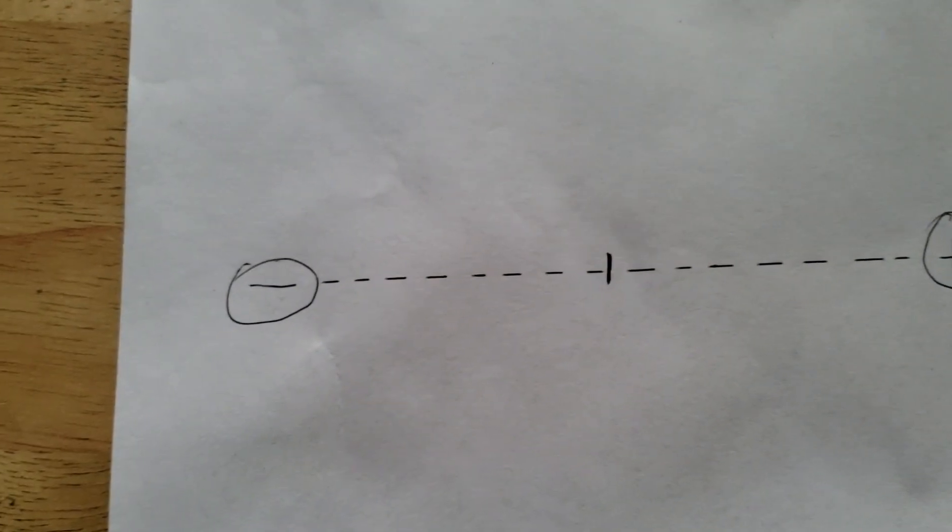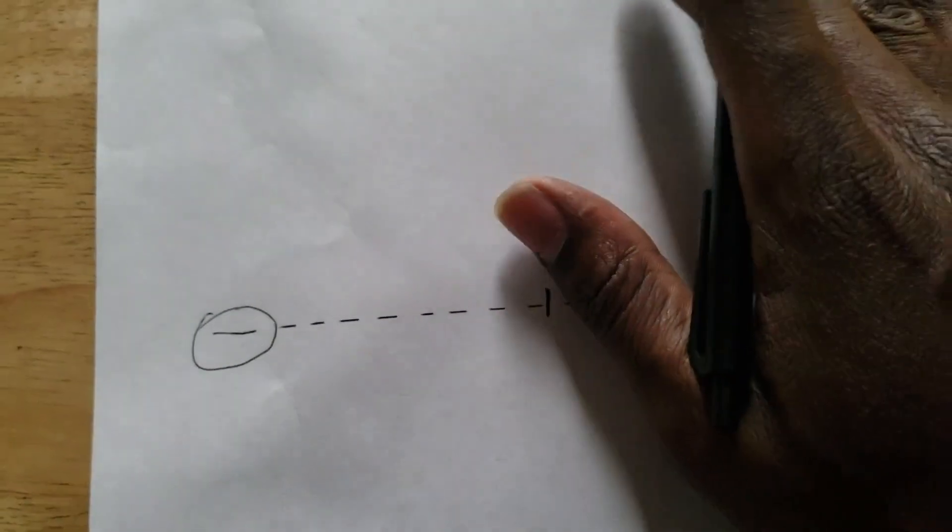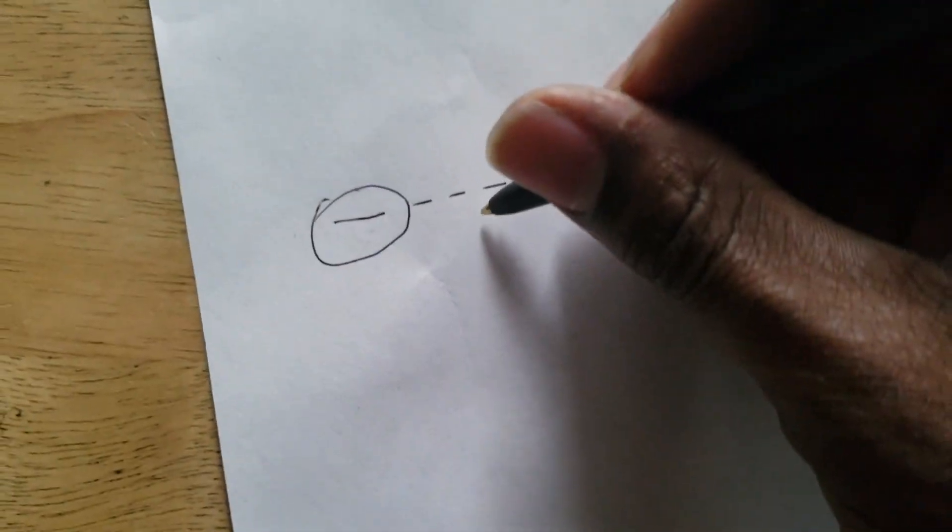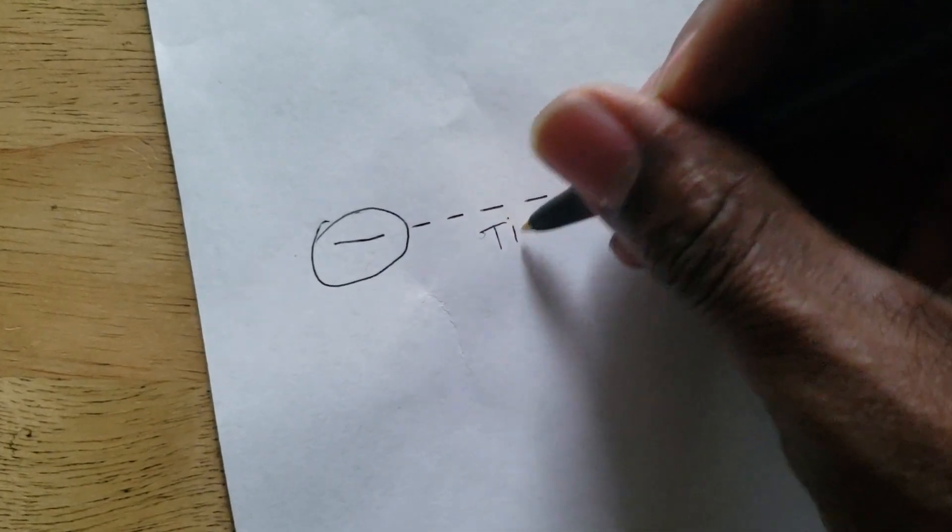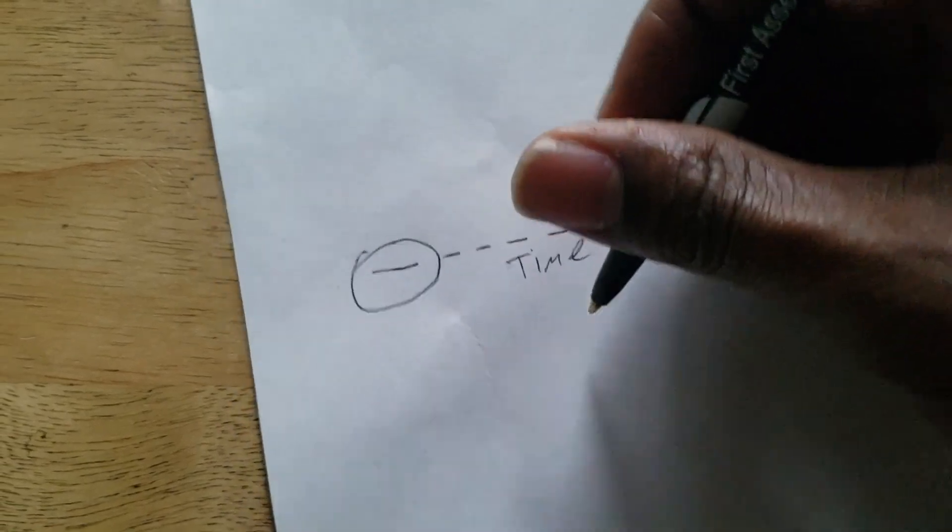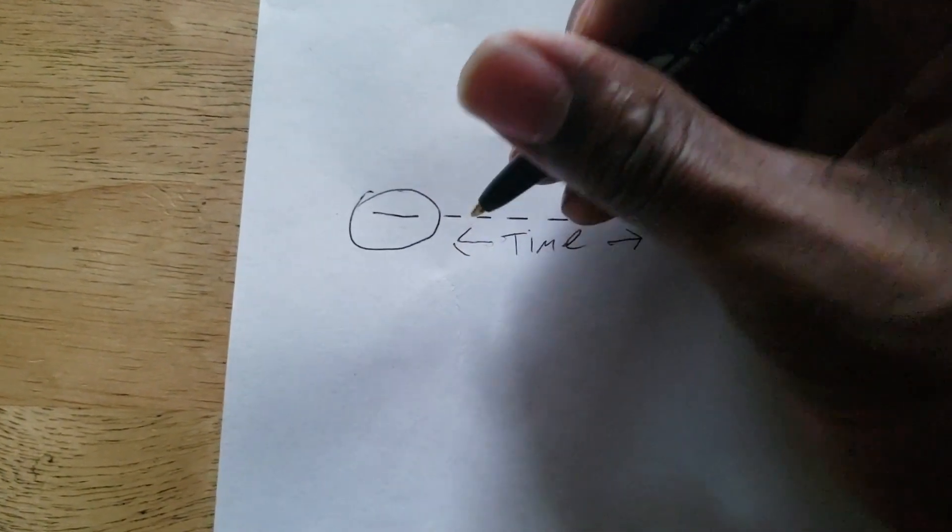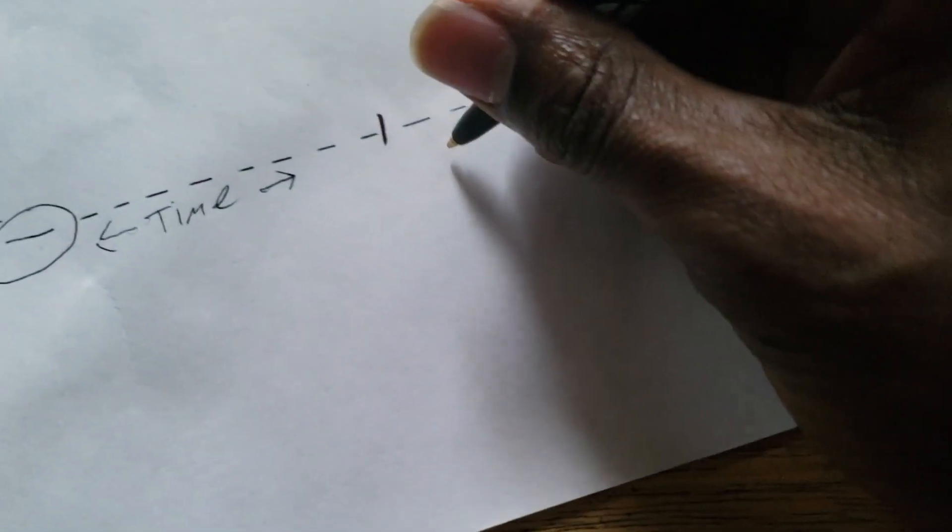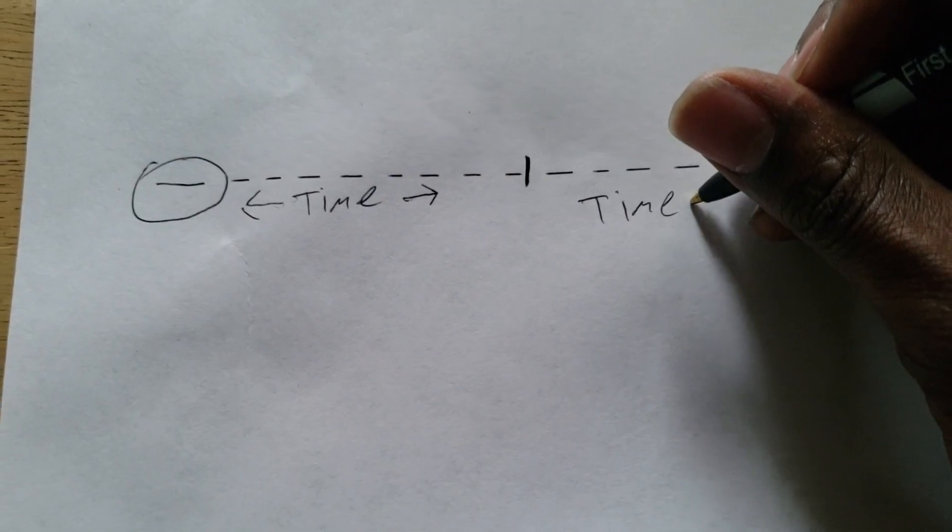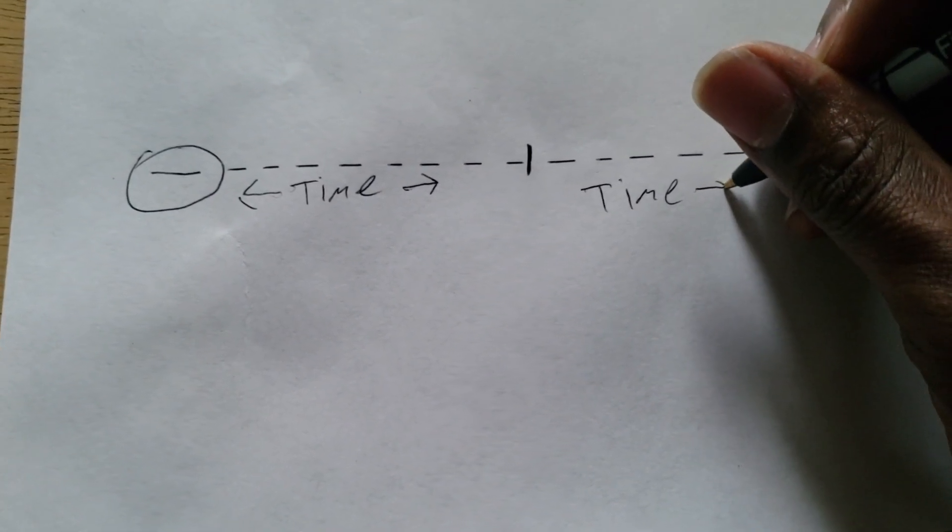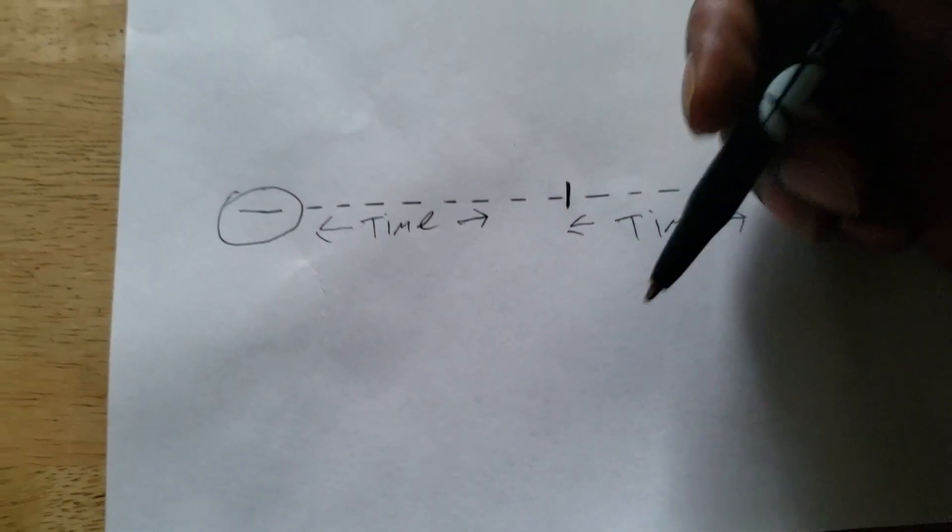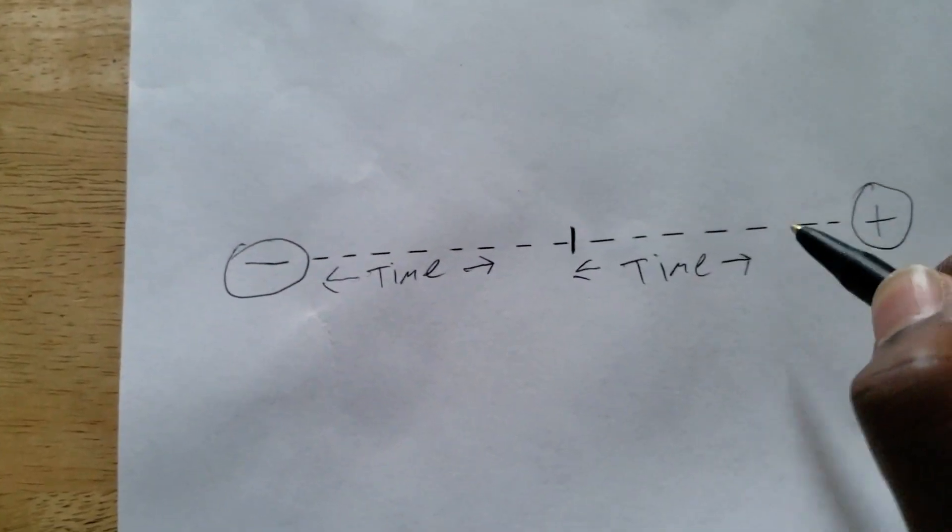When something happens we judge as bad, we're blinded to the benefits. So that causes a time delay. And over time, the benefits of it will start to show themselves to you finally because you didn't choose to see them at first. You were blinded to it.